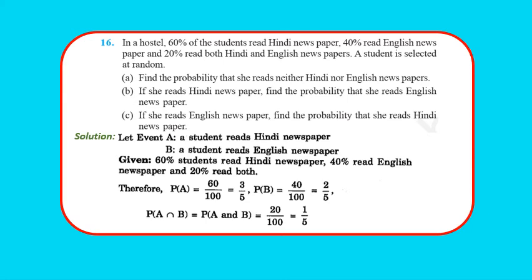Question 16: In a hostel, 60% of students read a Hindi newspaper, 40% read an English newspaper, and 20% read both. A student is selected at random. P(A) = 3/5, P(B) = 2/5, P(A∩B) = 1/5.